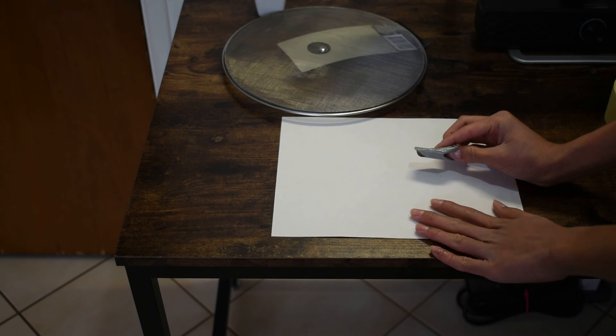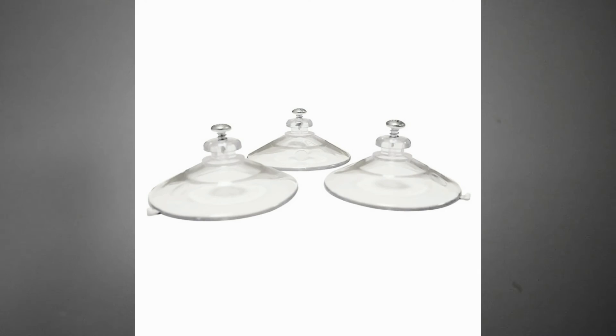The ruler trick and suction cups essentially use the same physics. The only difference is that the silicone in suction cups does not allow the air to flow in and is able to keep a strong vacuum.